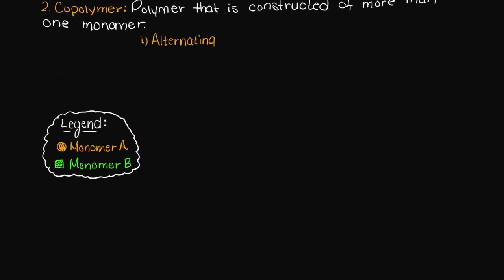Firstly, we could have an alternating copolymer. This is when monomers A and B alternate when creating a polymer structure.